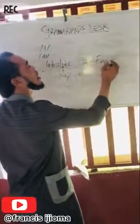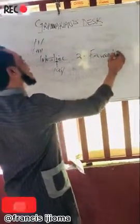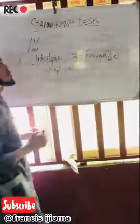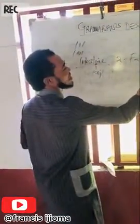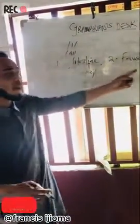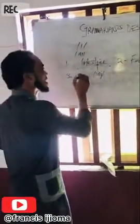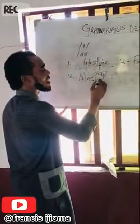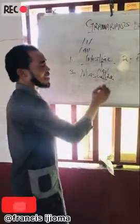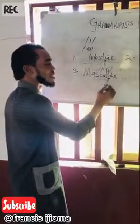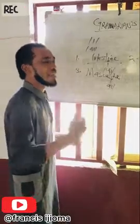Number two is 'favorite.' This word is pronounced as 'favorite,' not 'fervorite,' because there is no diphthong in that word. Number three is 'masculine.' The correct pronunciation of this word is 'masculine.' There is no diphthong here — 'masculine,' not 'masculine' with a diphthong.